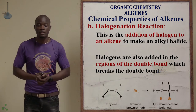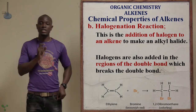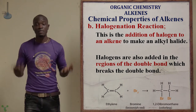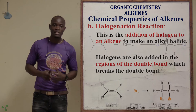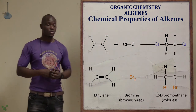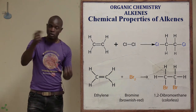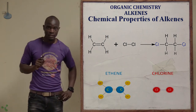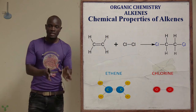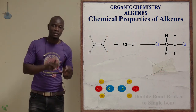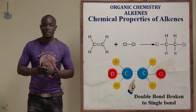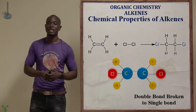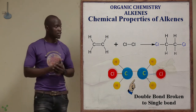Another example of an addition reaction is halogenation, which mainly involves adding a halogen to an alkene. The same thing happens — the double bond breaks to accommodate the halogens. For example, if we react ethene with chlorine, the double bond breaks, free electrons are formed, and the two chlorines join with the free electrons to form dichloroethane. That is exactly what happens — the chlorines react with ethene, the double bond breaks, and we get dichloroethane as the product.